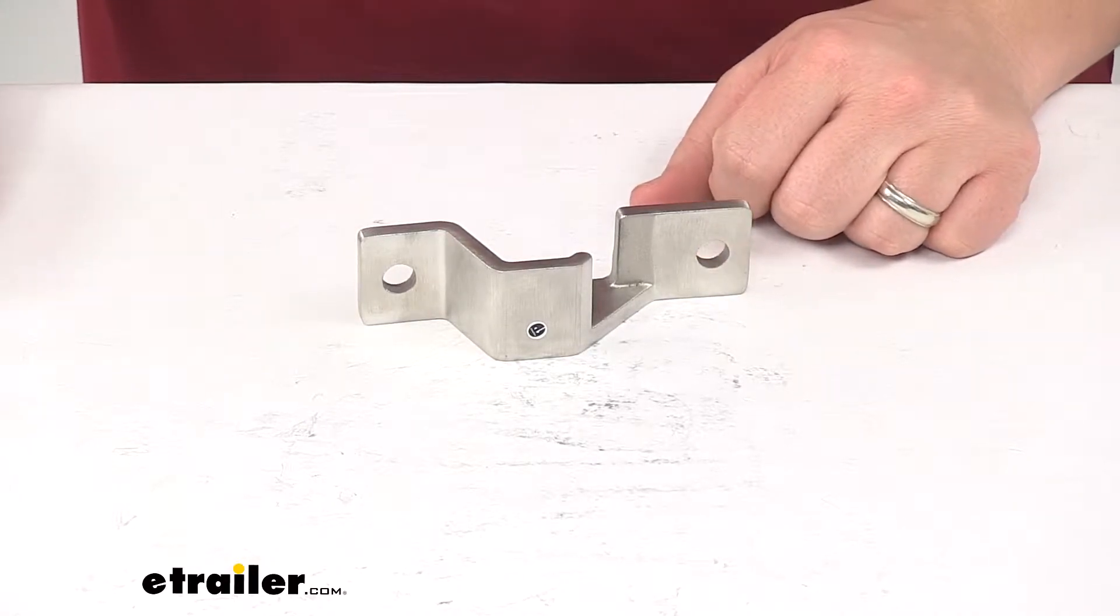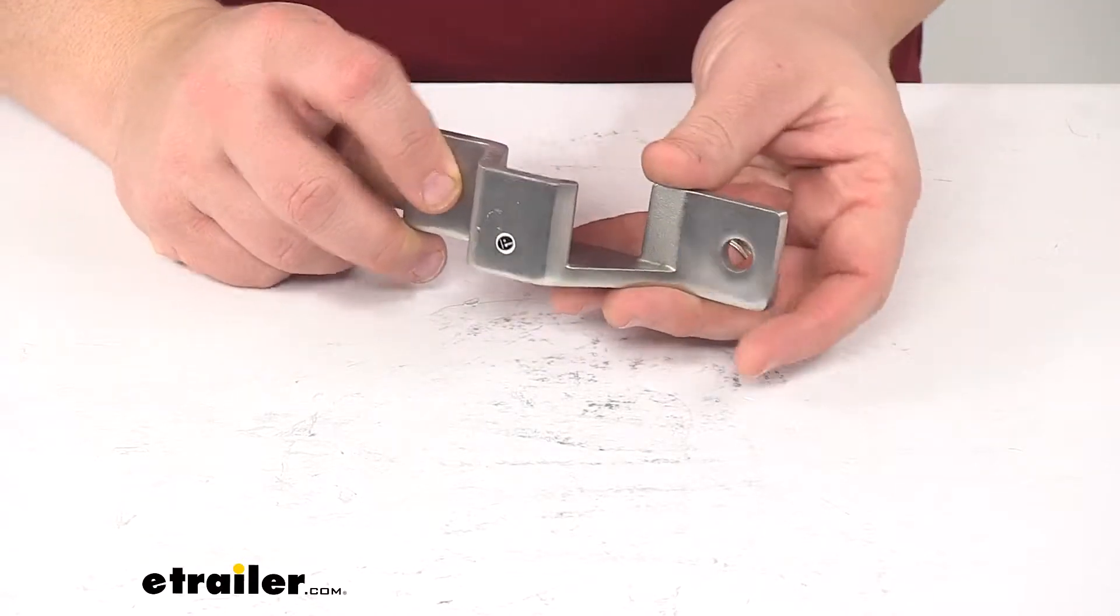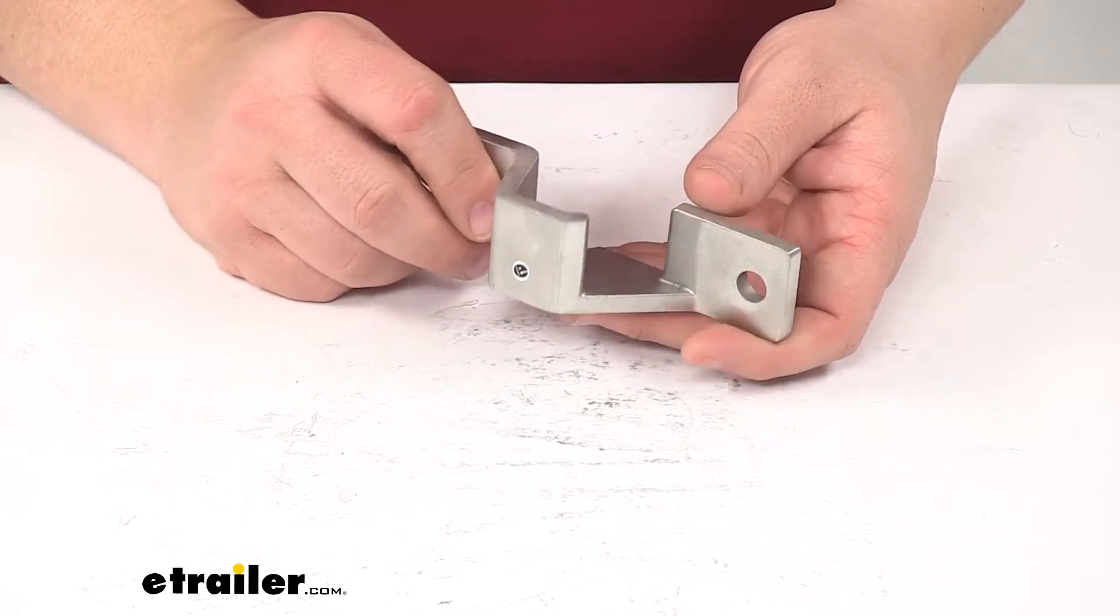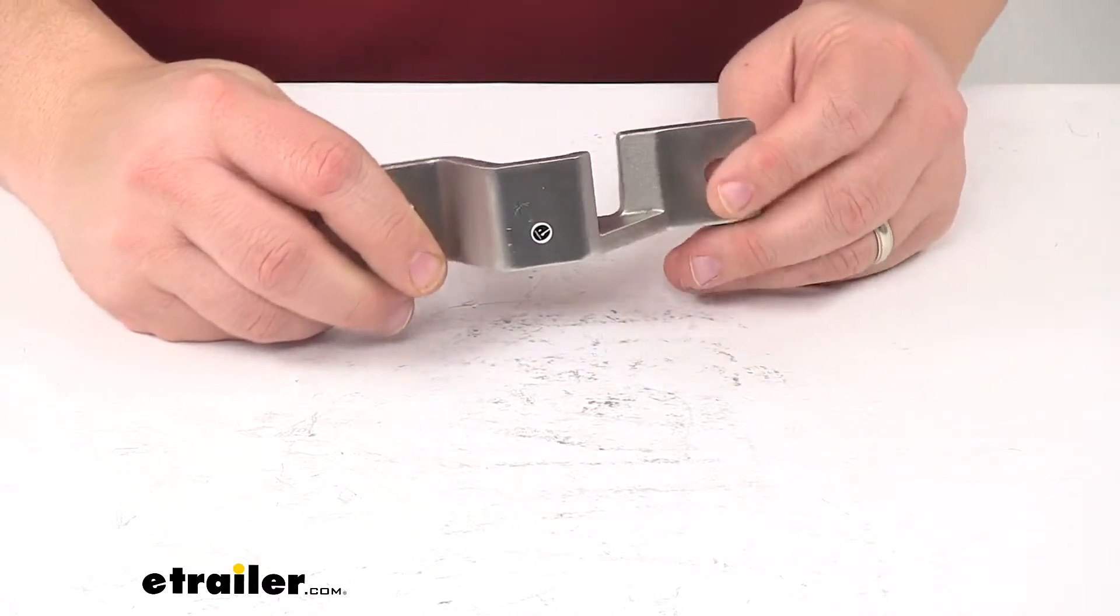Today we're taking a look at a replacement bottom keeper for Polar Cam Action Latch Kits. This replaces the bottom keeper on your Polar Cam Action lockable door latch kit, part number PLR158-SS.